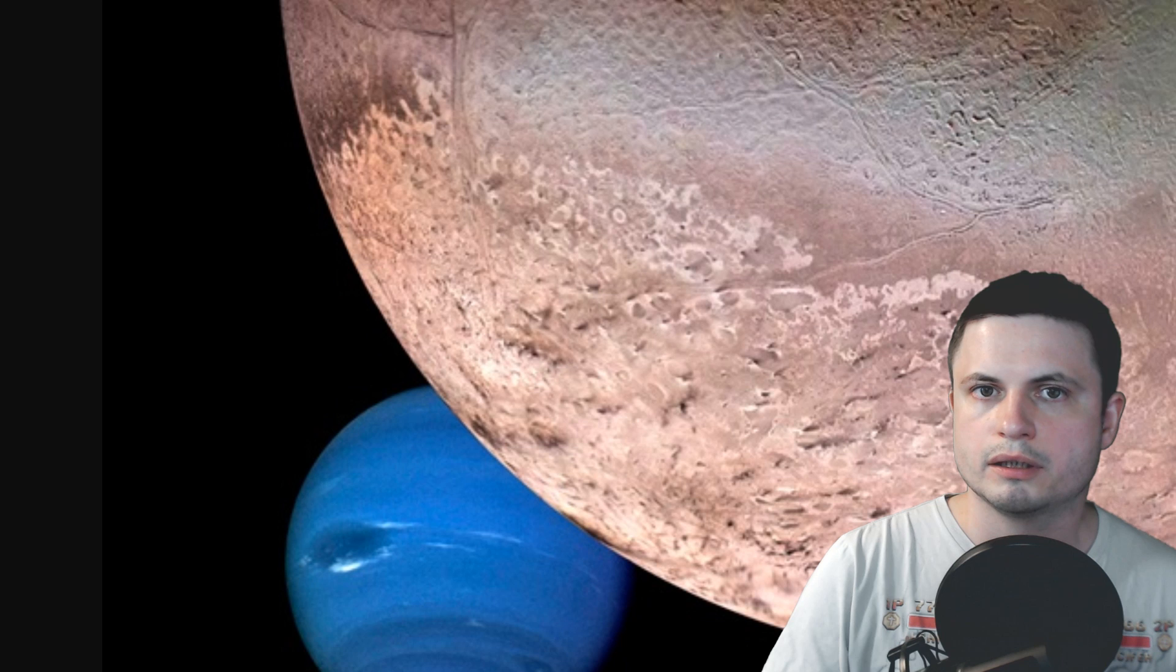Interesting. Take a look at this, the object known as Triton, one of the moons of Neptune. There's something somewhat similar about all of these objects. They all have this very unusual shade of brownish red.